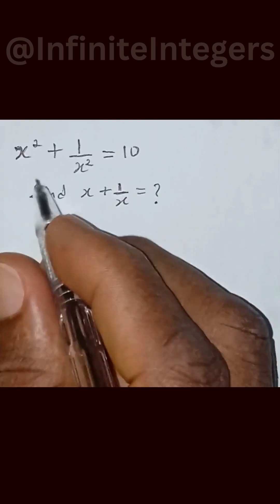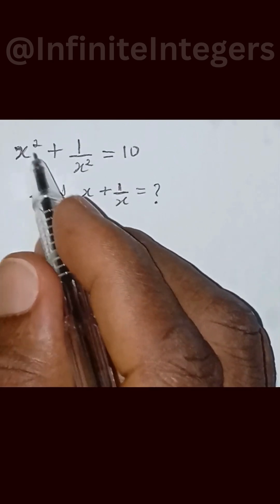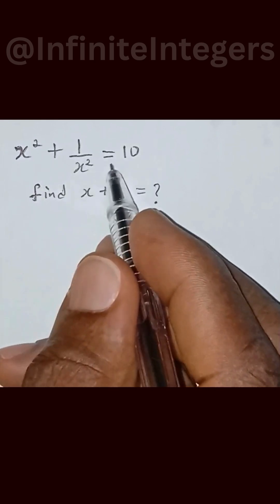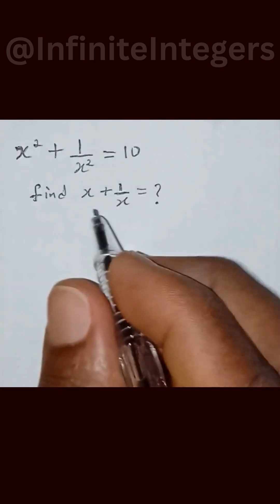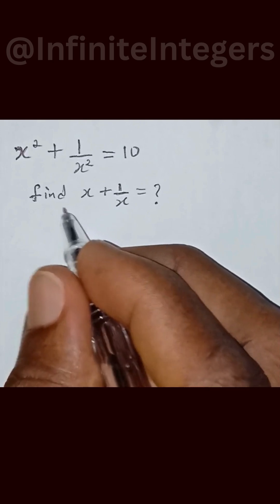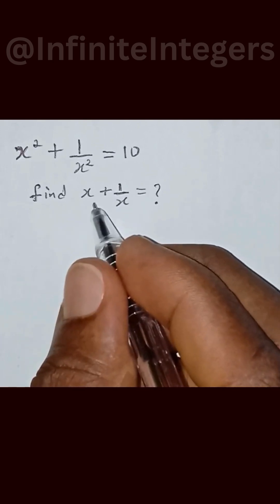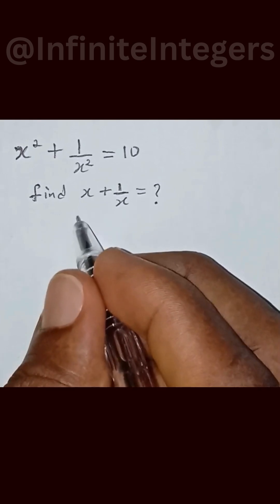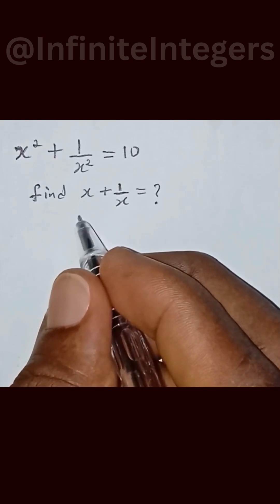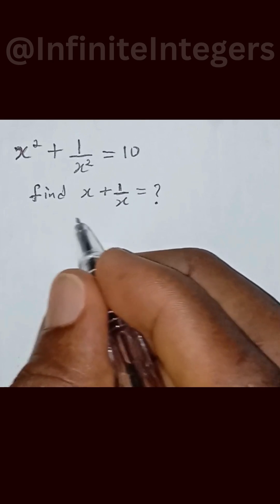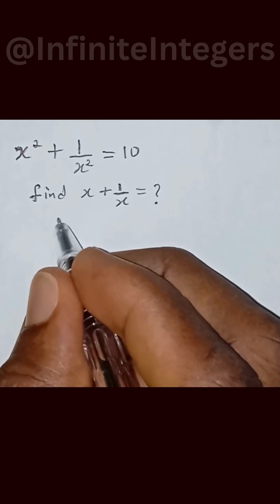We have x squared plus 1 over x squared equal to 10, and we have to find x plus 1 over x. What is the value for x plus 1 over x? Solution.